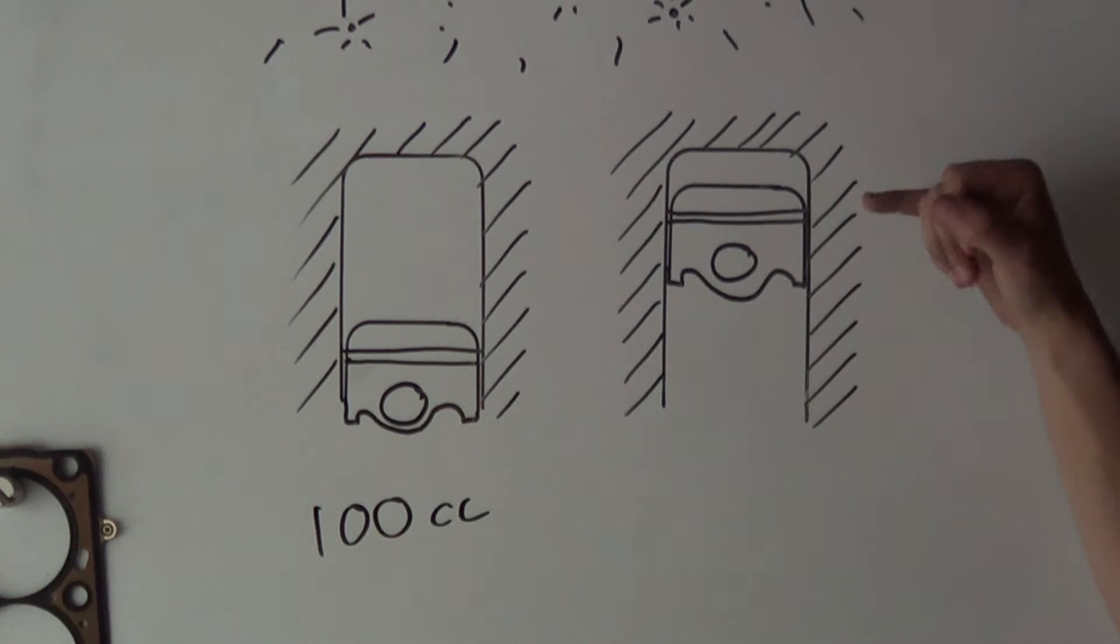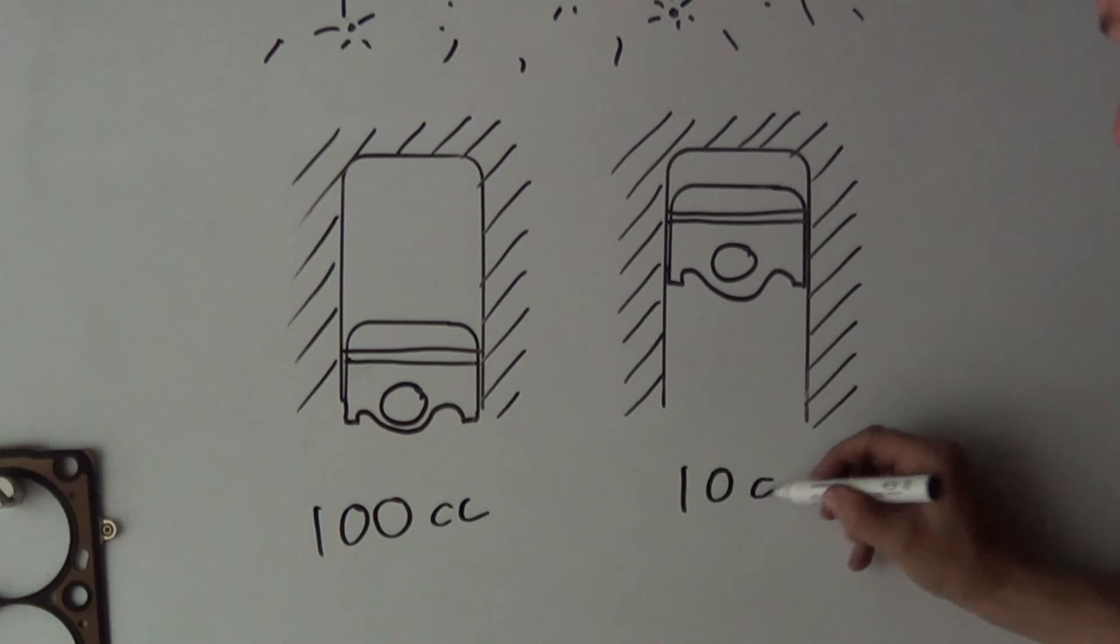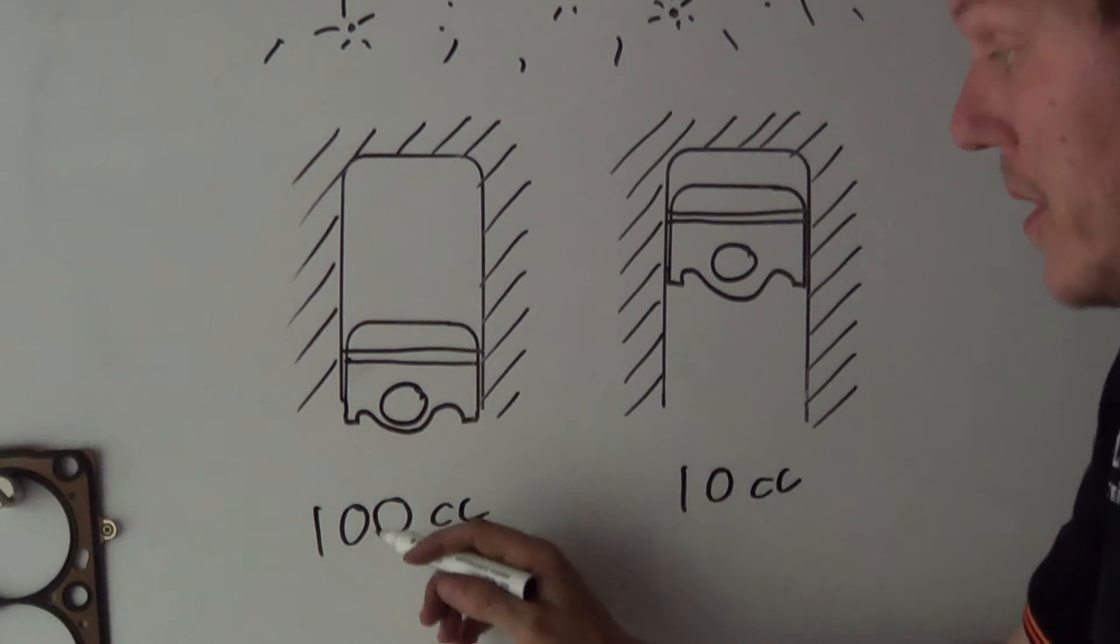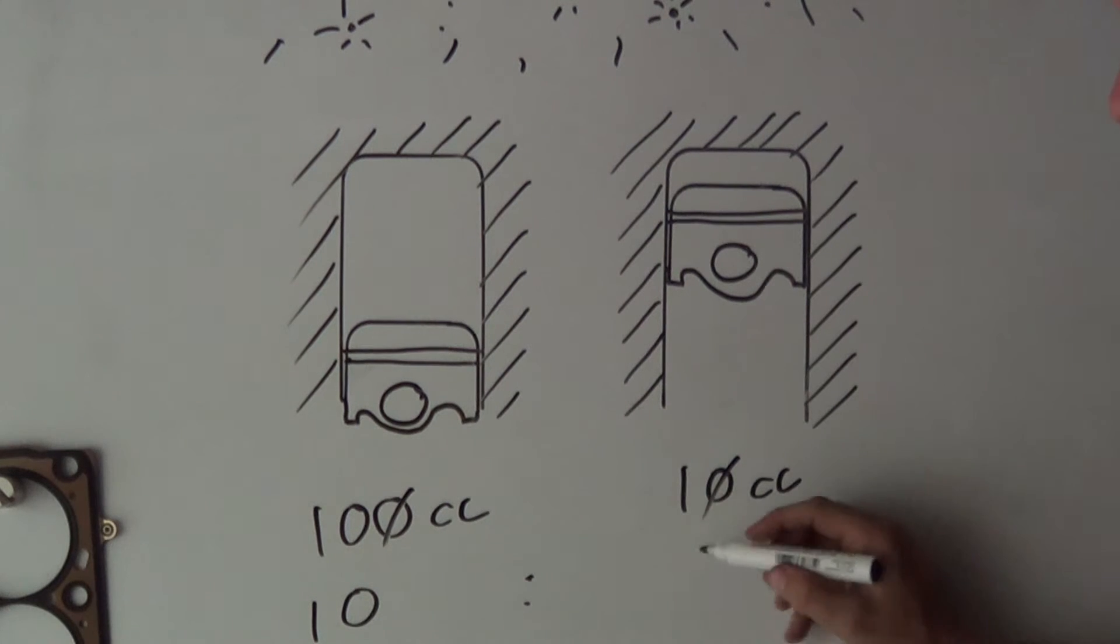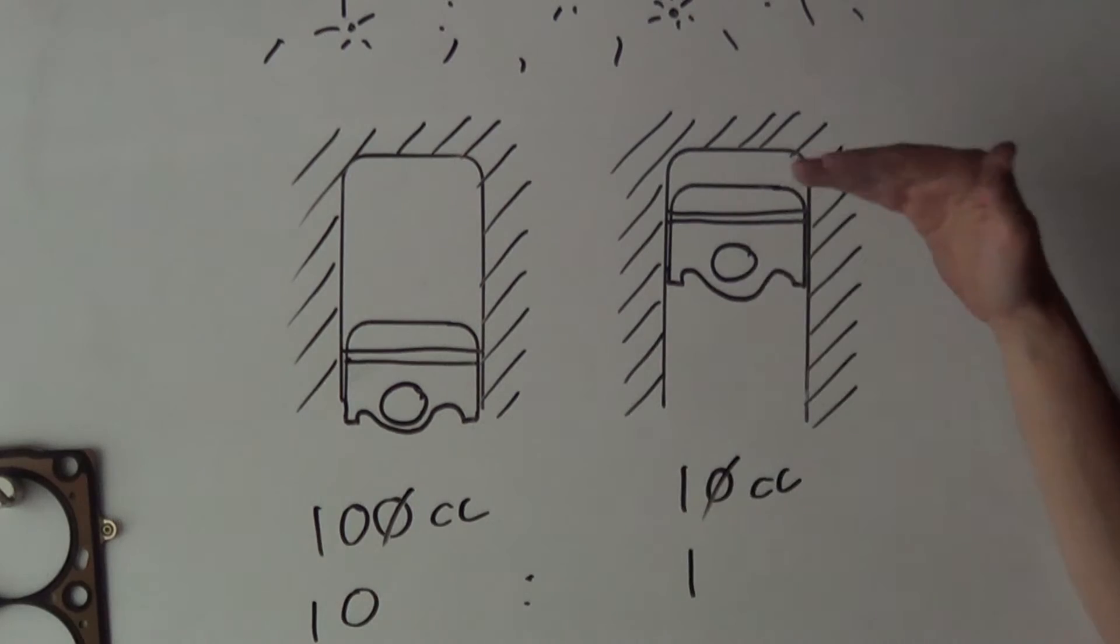So let's just say that this void inside this cylinder is 100cc. When the piston is at the top of its stroke, the volume inside the cylinder has decreased to 10cc. Now if we do a bit of maths, we cross off that 0, cross off that 0, we'll have 10 here and then we have 1 here. So this is a compression ratio of 10 to 1.